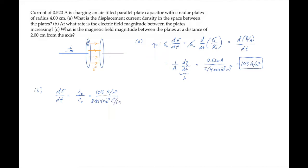So we just need to substitute the known values and calculate, finding that the electric field magnitude between the plates is increasing at the rate of 1.16 times 10 to the 13th volts per meter per second.